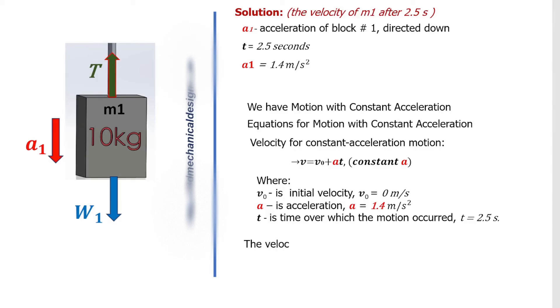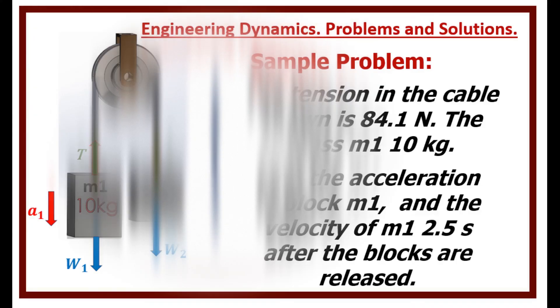The Velocity of M1 after 2.5 seconds, V equals 0 plus 1.4 times 2.5. V equals 3.5 meters per second. I hope you found this video helpful.